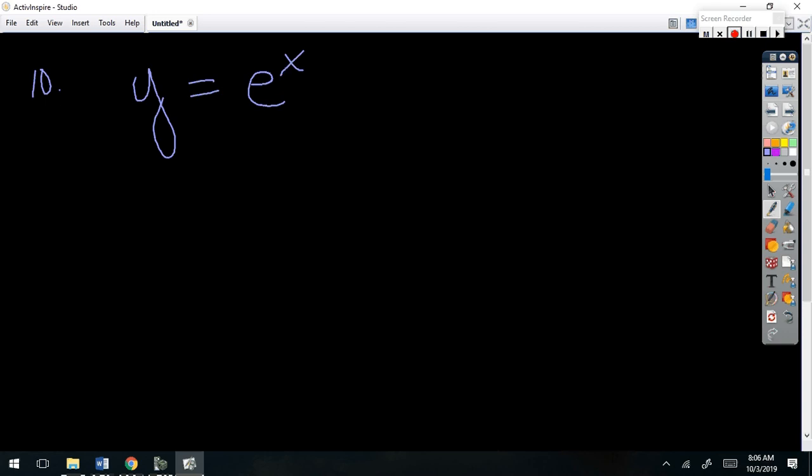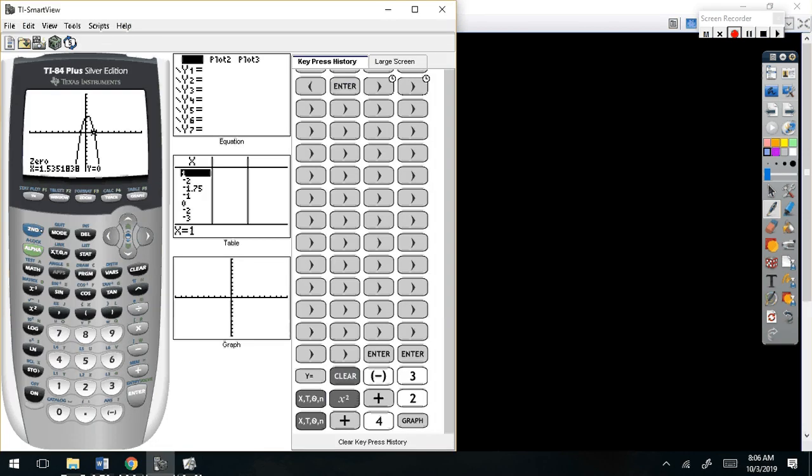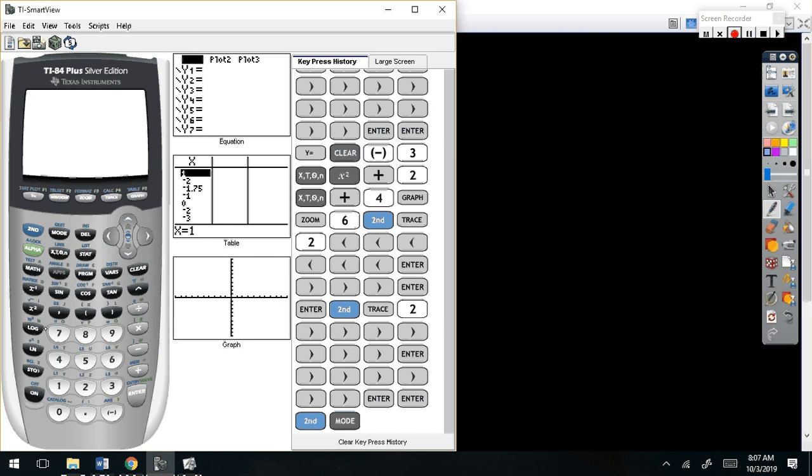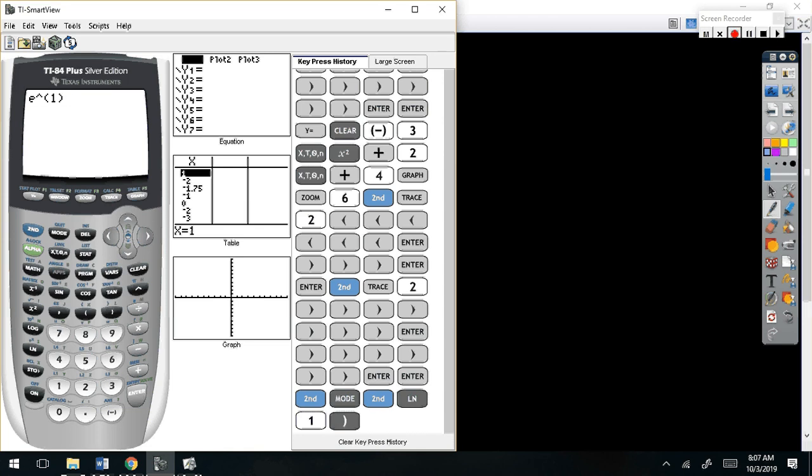There's a button on your calculator that says E. If you look right above this LN button, second E, if I do E to the first power there's my value of E. It's just an irrational number. That's all you have to know about it.